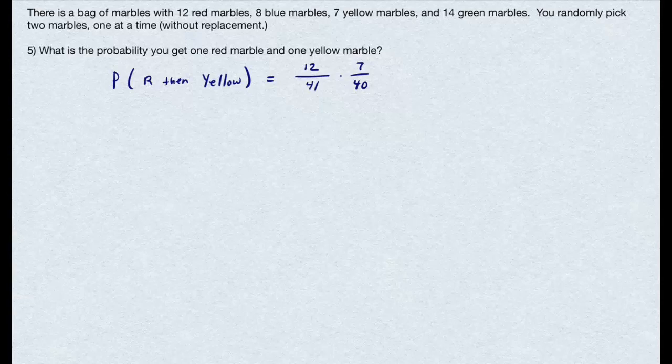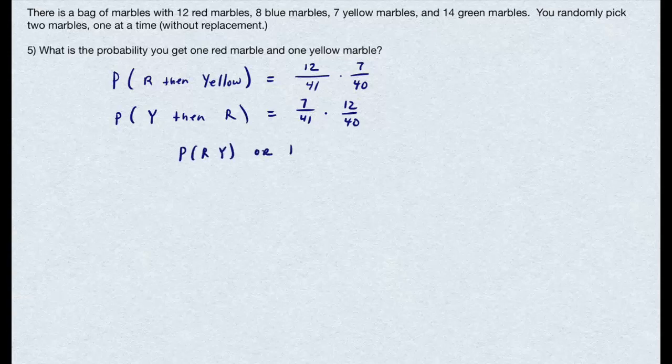The question, though, says, what's the probability of getting a red marble and a yellow marble? Which means I could get the yellow marble first, and then the red marble. That probability is 7 out of 41 times 12 out of 40. So I need to add these together, because either the probability of a red marble then a yellow, or the probability of a yellow marble then a red, makes this statement true, or translates to addition.